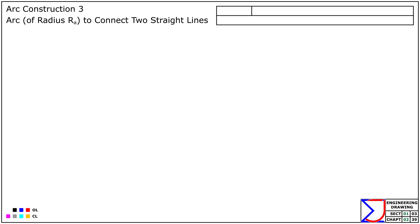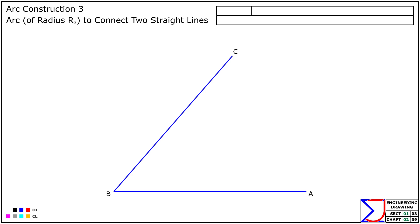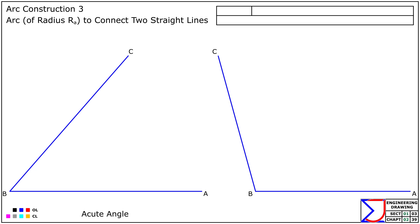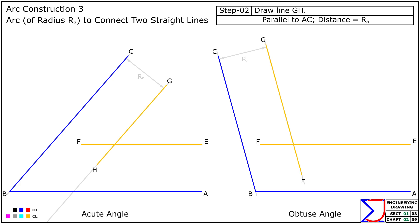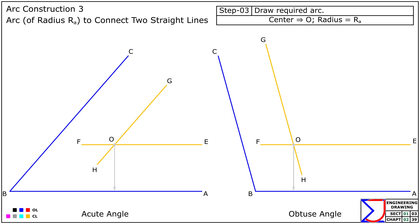Arc Construction 3: Now let's move on to connecting two straight lines AB and BC with an arc of a given radius RA. These two lines can either form an acute angle or an obtuse angle. In both cases, first draw a line parallel to AB at a distance equal to RA from AB. Similarly, draw a line parallel to BC at the same distance RA from it. The intersection of these two parallel lines gives the center of the arc, denoted as point O. With O as the center and radius equal to RA, draw the required arc. This technique ensures a seamless arc connection between the two lines, maintaining the specified radius for a smooth junction.